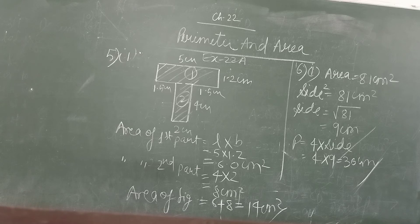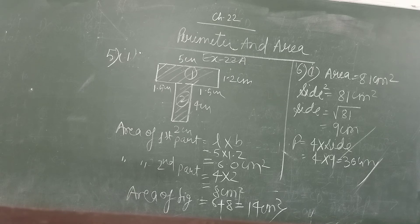Ninth question: find the area in hectares of the field whose length and perimeter are given. This is exactly the same as question number 3, third part — length and perimeter are given, and you have to get the area.